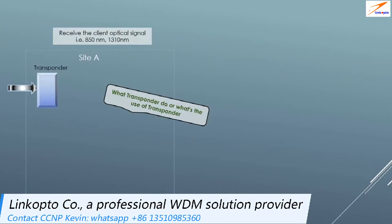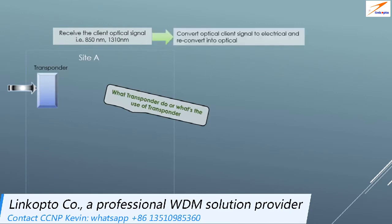It receives the client optical signal, which may be on 850 nanometers, 1310 nanometers, or any other appropriate wavelength. Then it converts the optical client signal to electrical and reconverts it back to optical using two diodes connected back-to-back inside the transponder, and then assigns an ITU frequency to that signal.